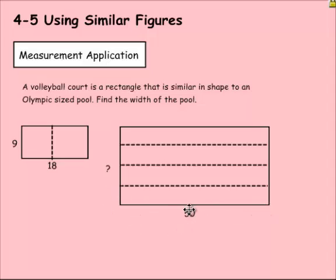So I know the long side here is 50. The long side here is 18. So I can write a proportion 50 to 18. The pool has 50 and the volleyball court has 18. And then I'm going to write the same proportion. I'm going to do X instead of a question mark. X over 9.